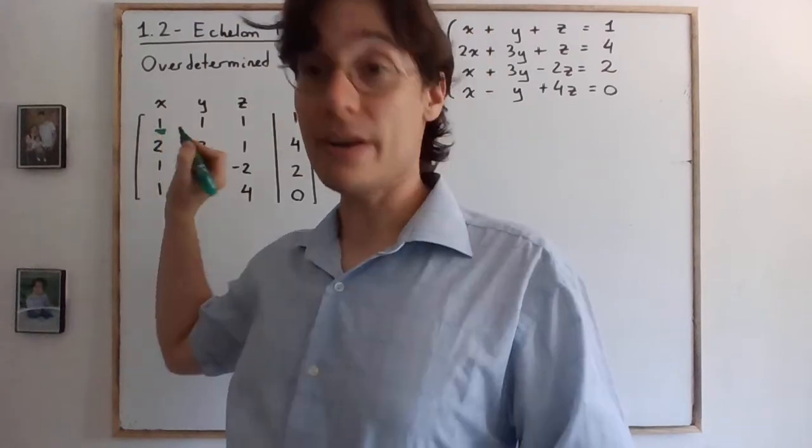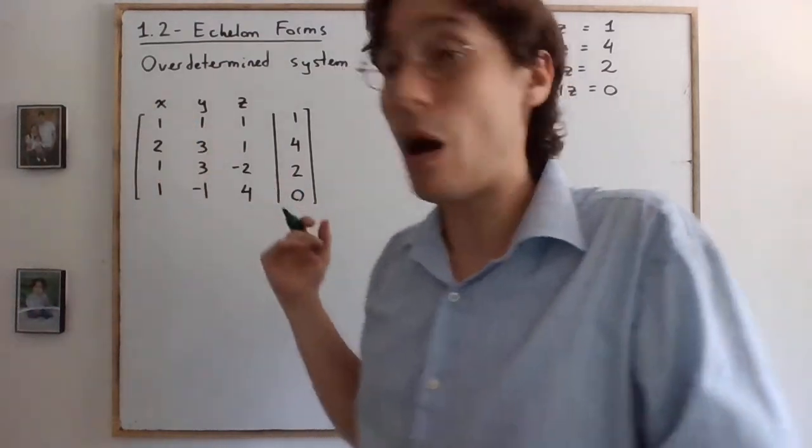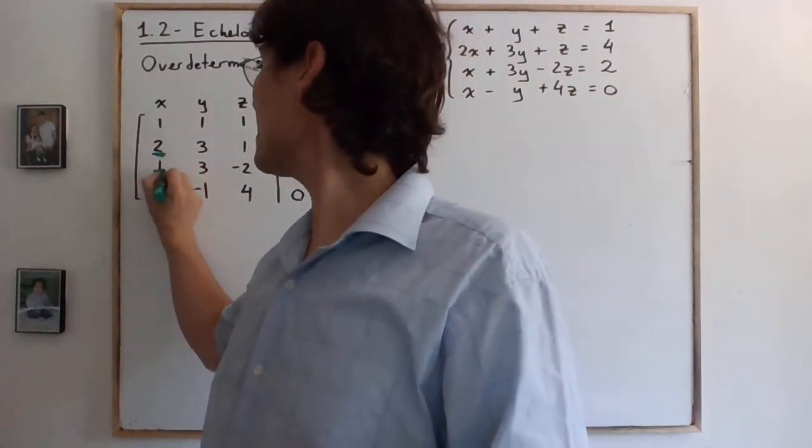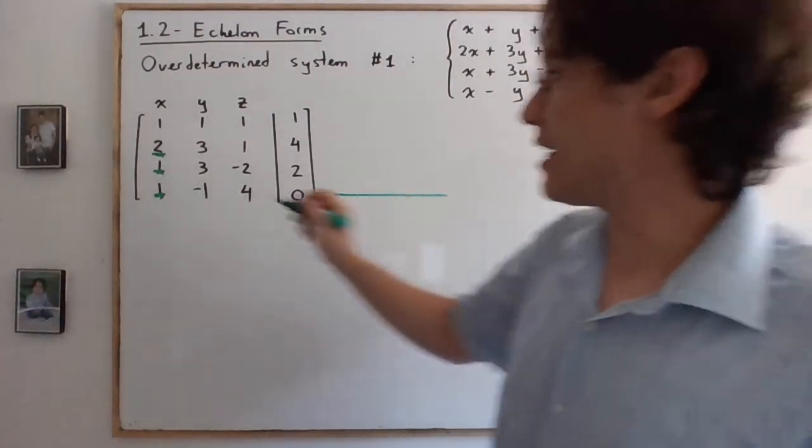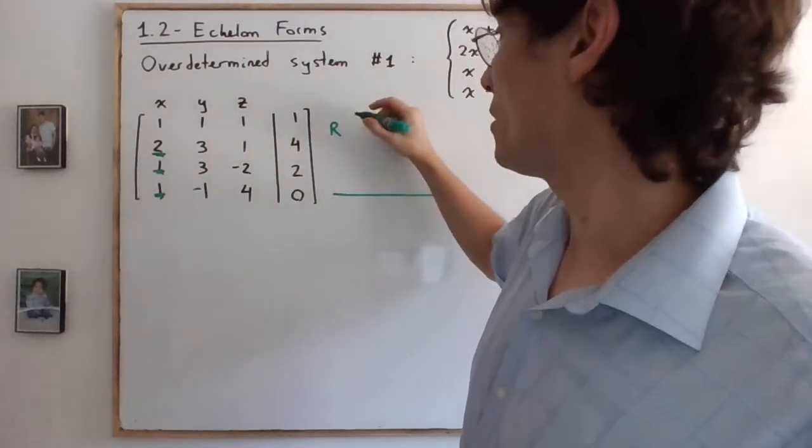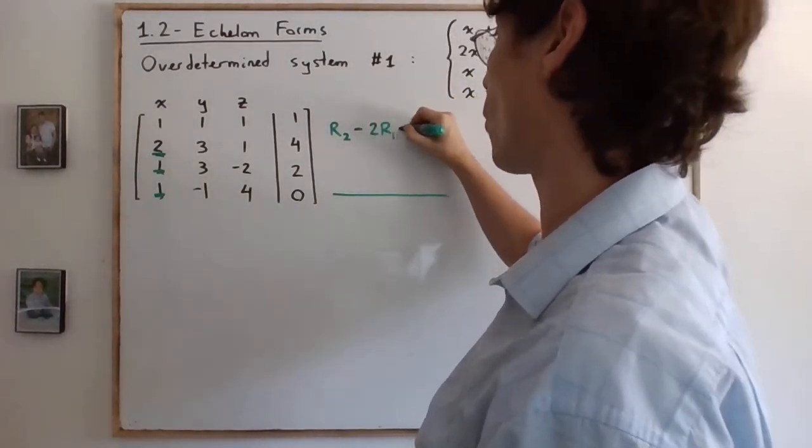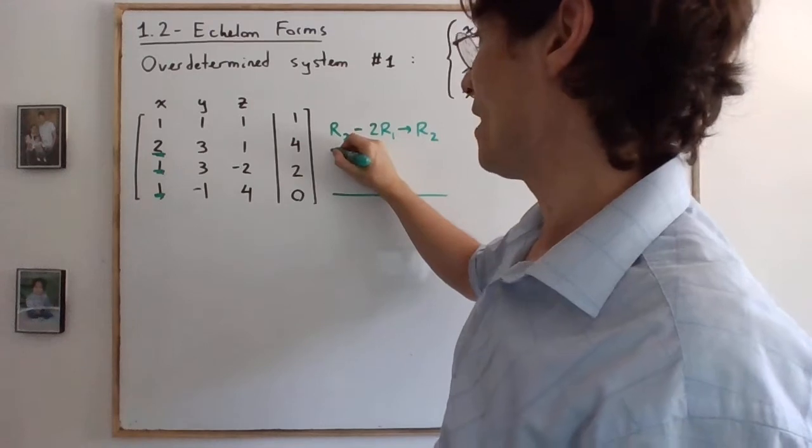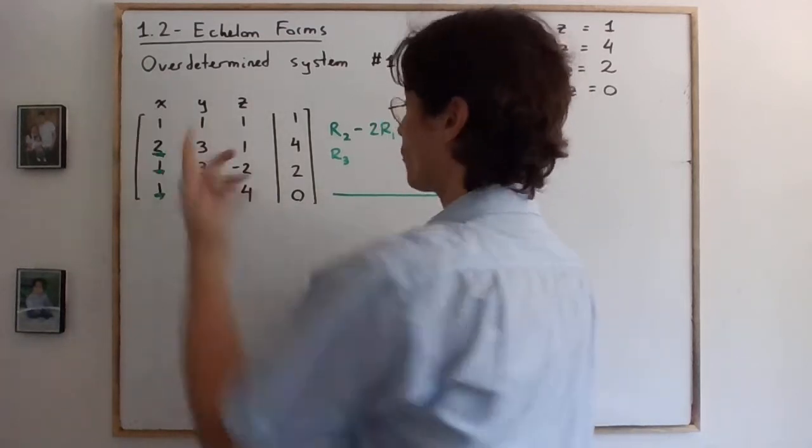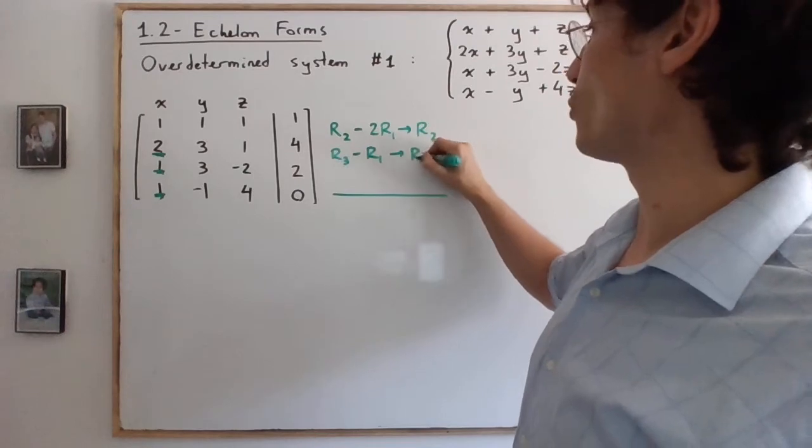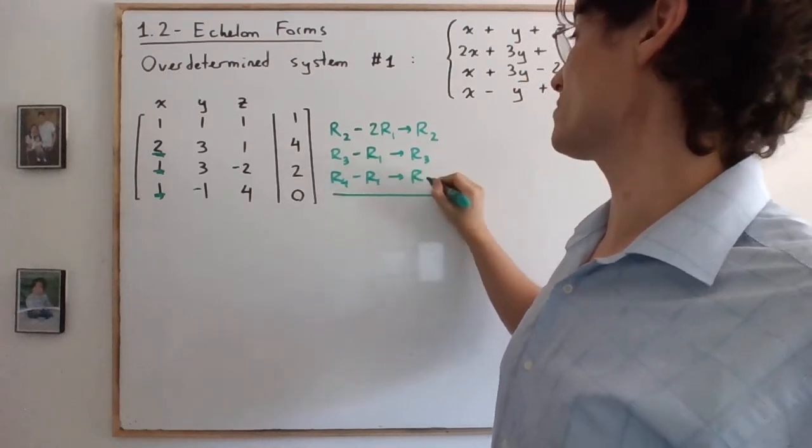We already have a one here, that's awesome. It means we don't have to do an operation to put a one here. So our first operation will consist of making these numbers zero. We're going to do three row operations at once. The first one is going to change the second row, so row two minus twice row one. Then for row three and row four it's quite easy because they're both one. So row three minus row one becomes the new row three, and row four minus row one becomes the new row four.